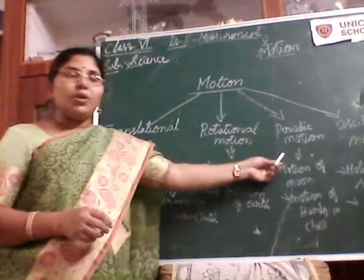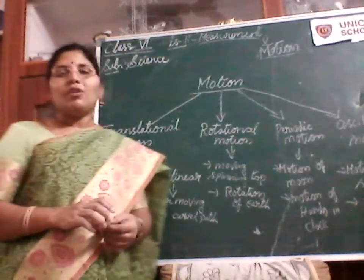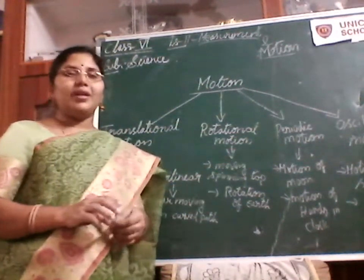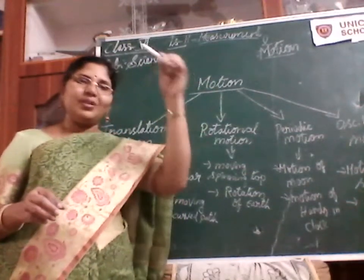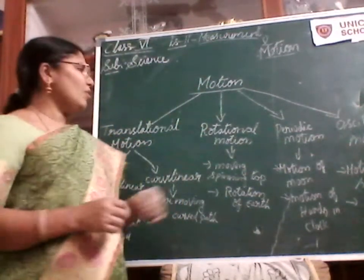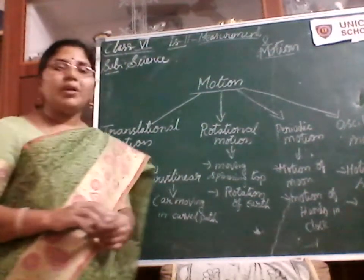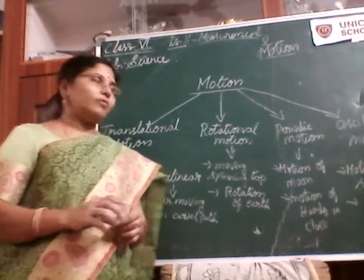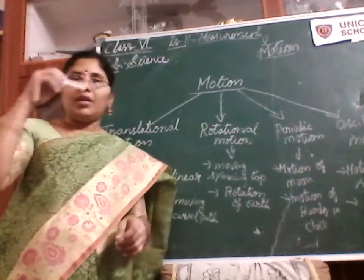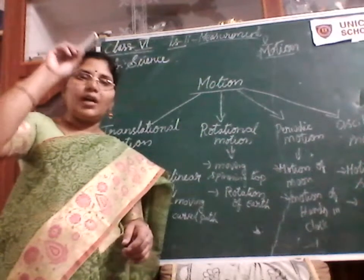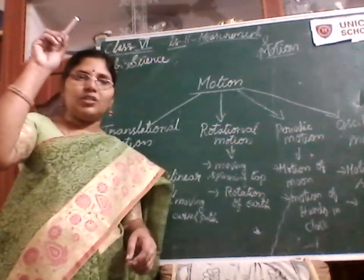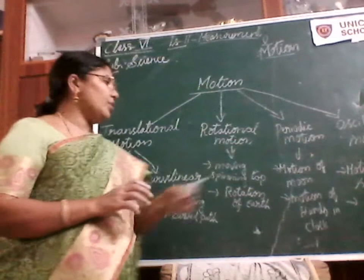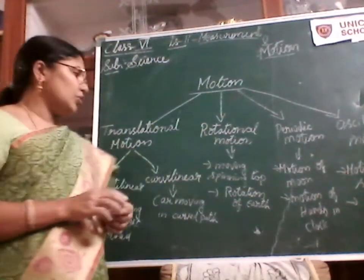The third type is periodic motion. Periodic motion means the movement of an object repeated after a particular time is called periodic motion. Think of a clock — after completing one round, the hand again reaches 12. The movement of an object repeated after a particular time is called periodic motion.